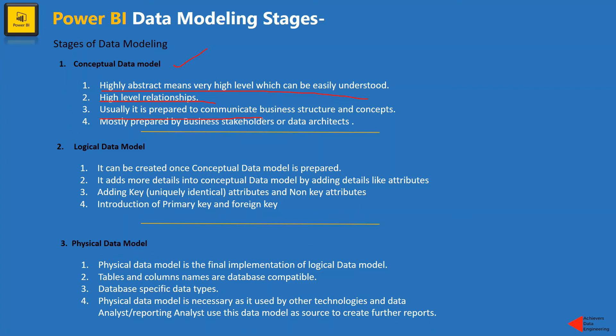Another stage is the logical data model. This can be prepared once the conceptual data model is prepared. The logical data model adds a lot more detail into the conceptual data model, like adding attributes. In terms of SQL, we don't just talk about tables as in the conceptual model — in the logical data model we add attributes and introduce primary keys and foreign keys, and also add uniquely identifiable attributes or non-key attributes in the tables.